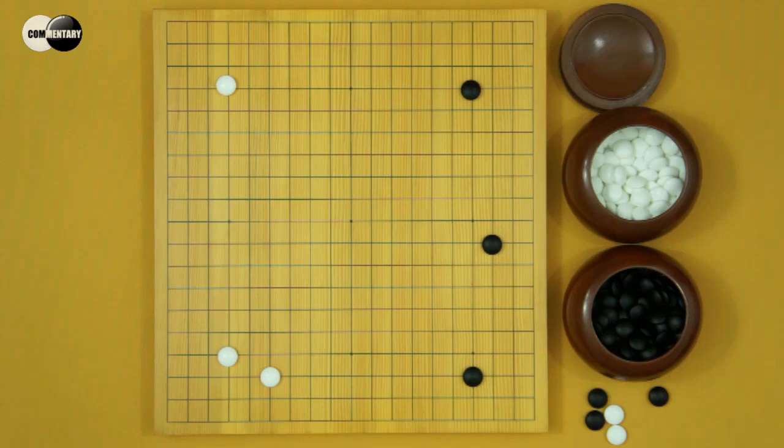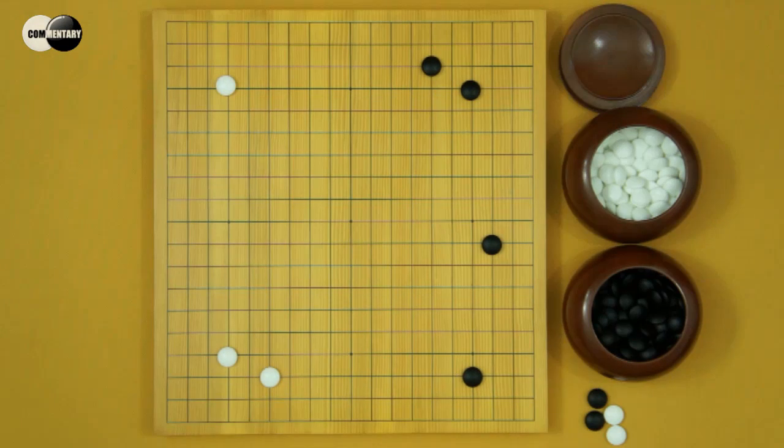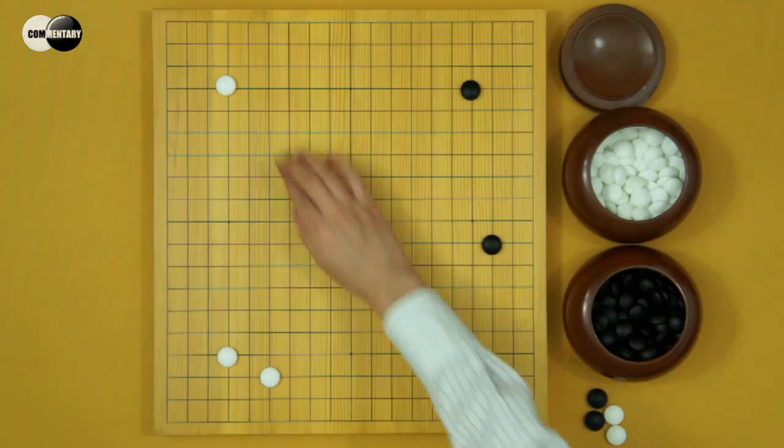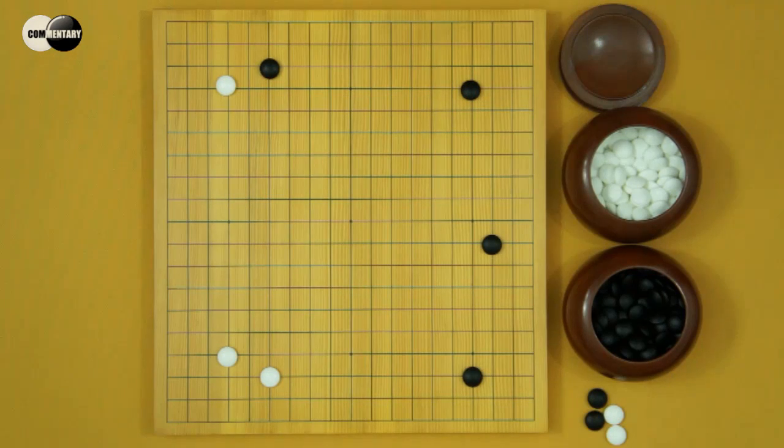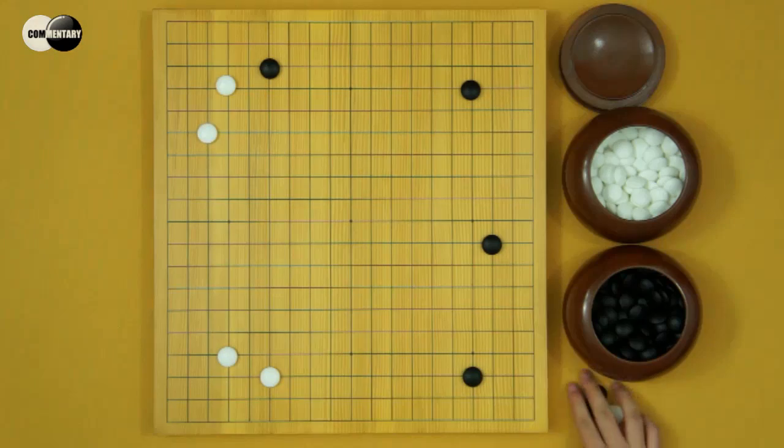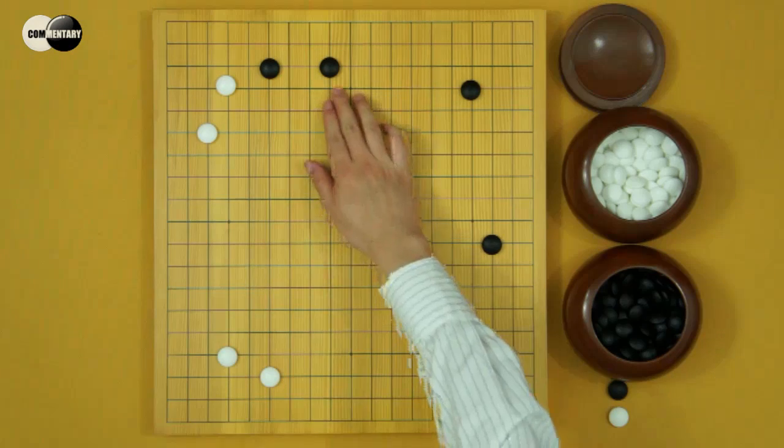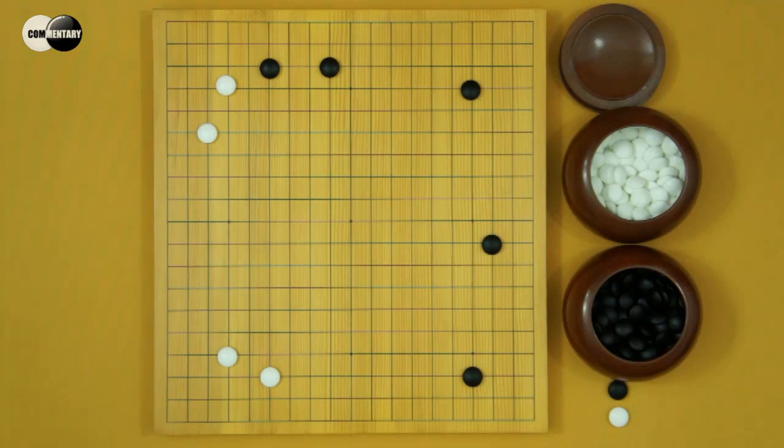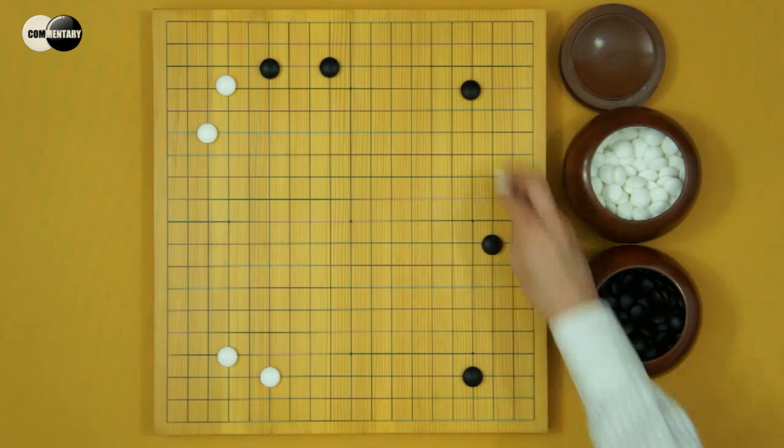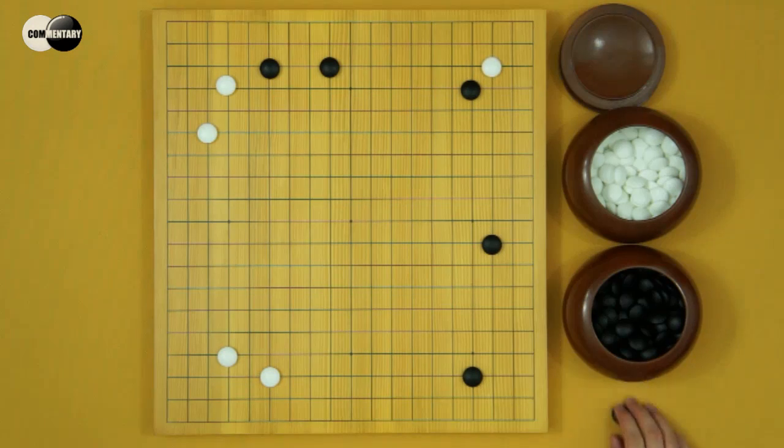Black will kakari. What's interesting is, after White keima, Black will keima. That is because, if Black kakari, White keima, Black extends. After this move, the sansan becomes a very good point. White invades, very comfortable.